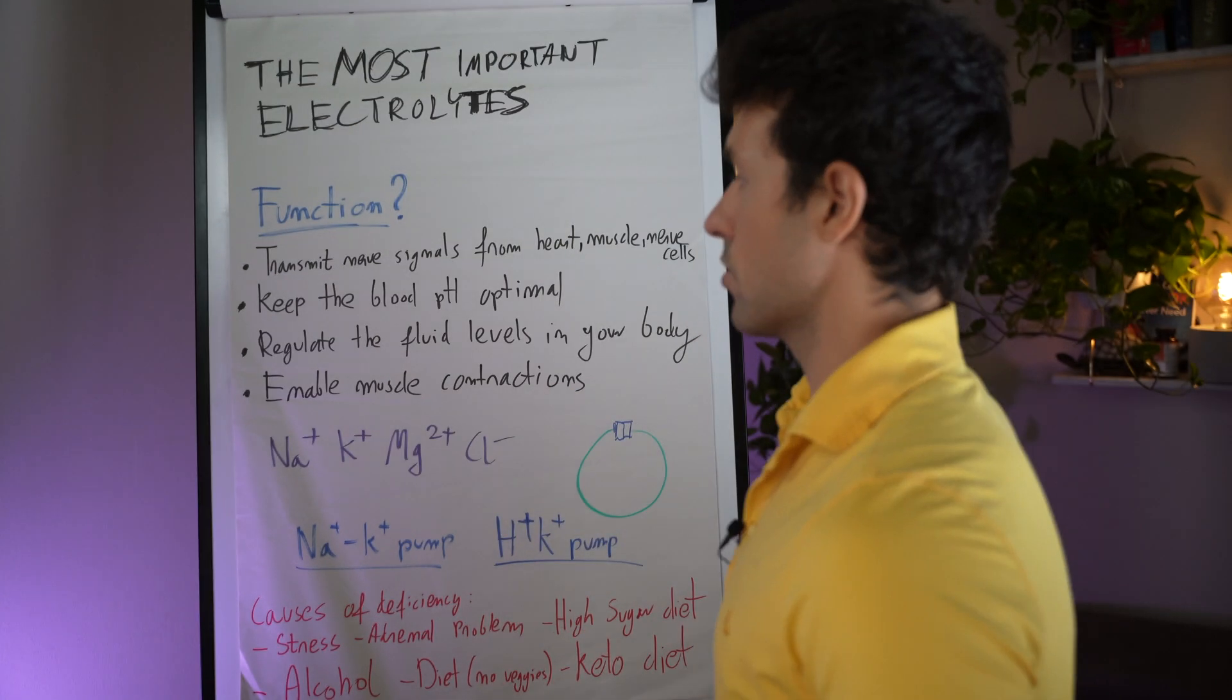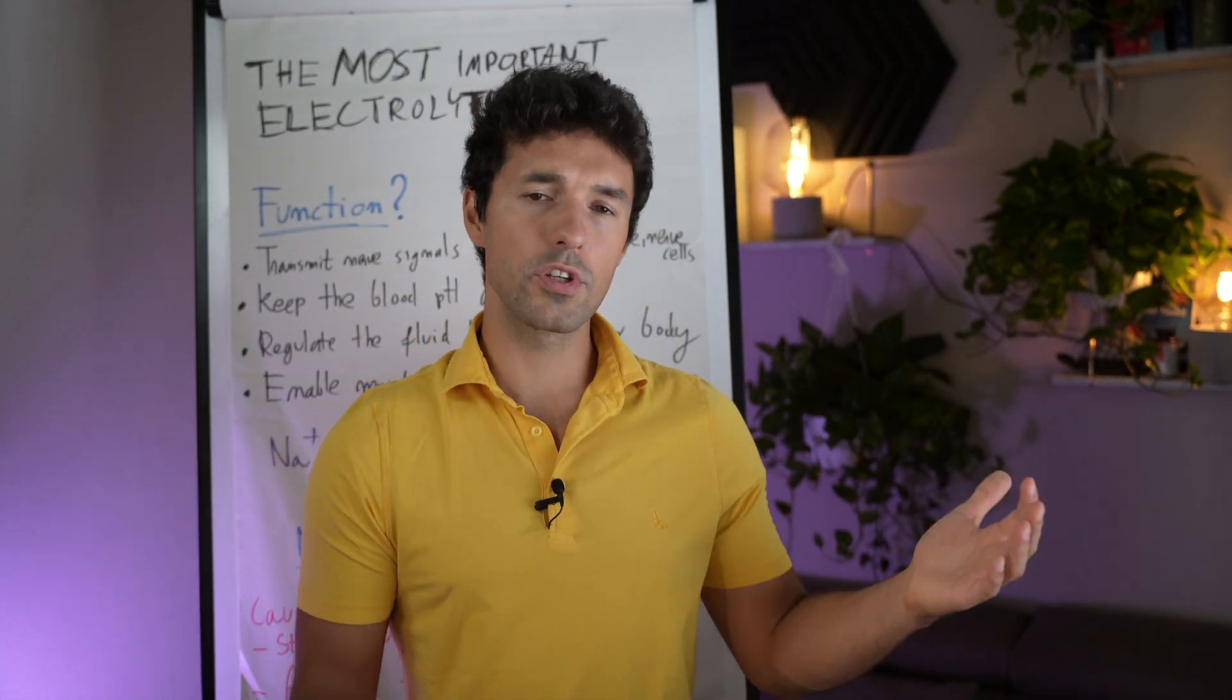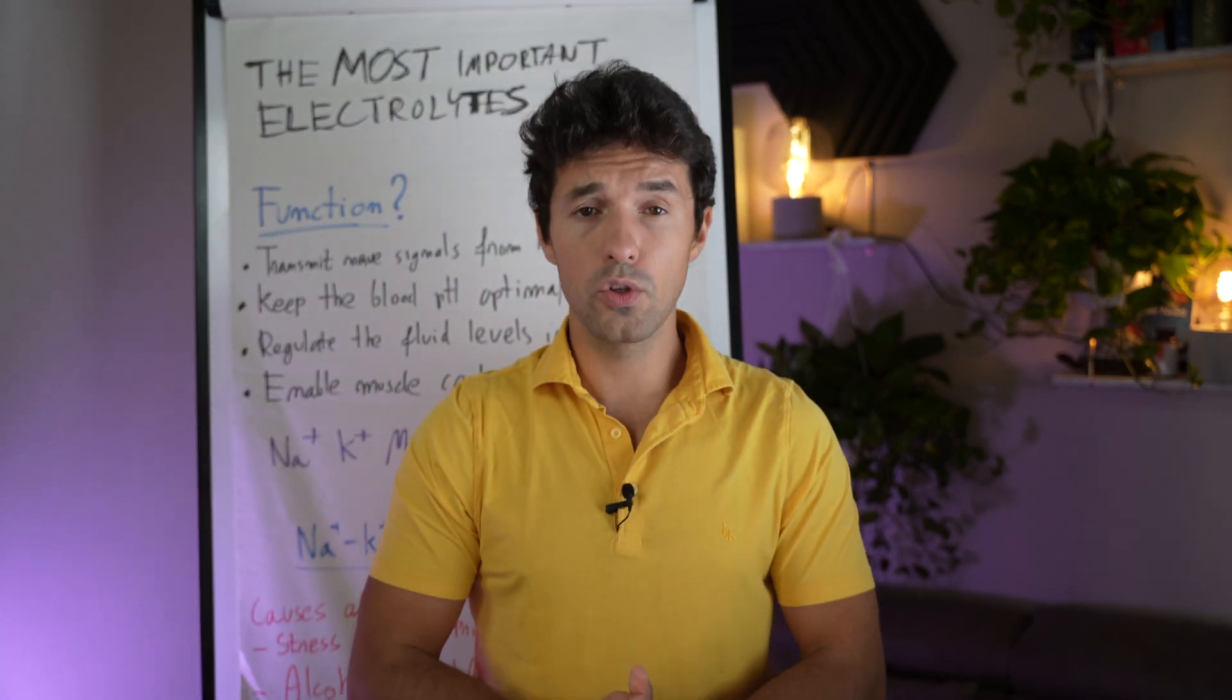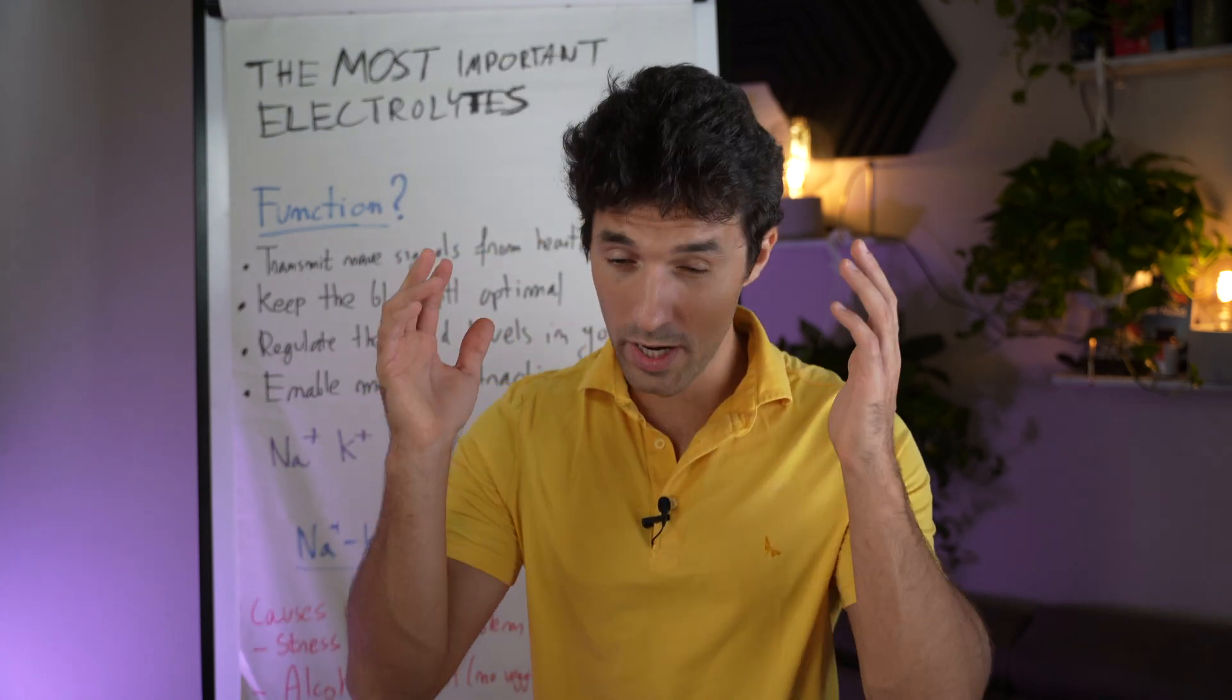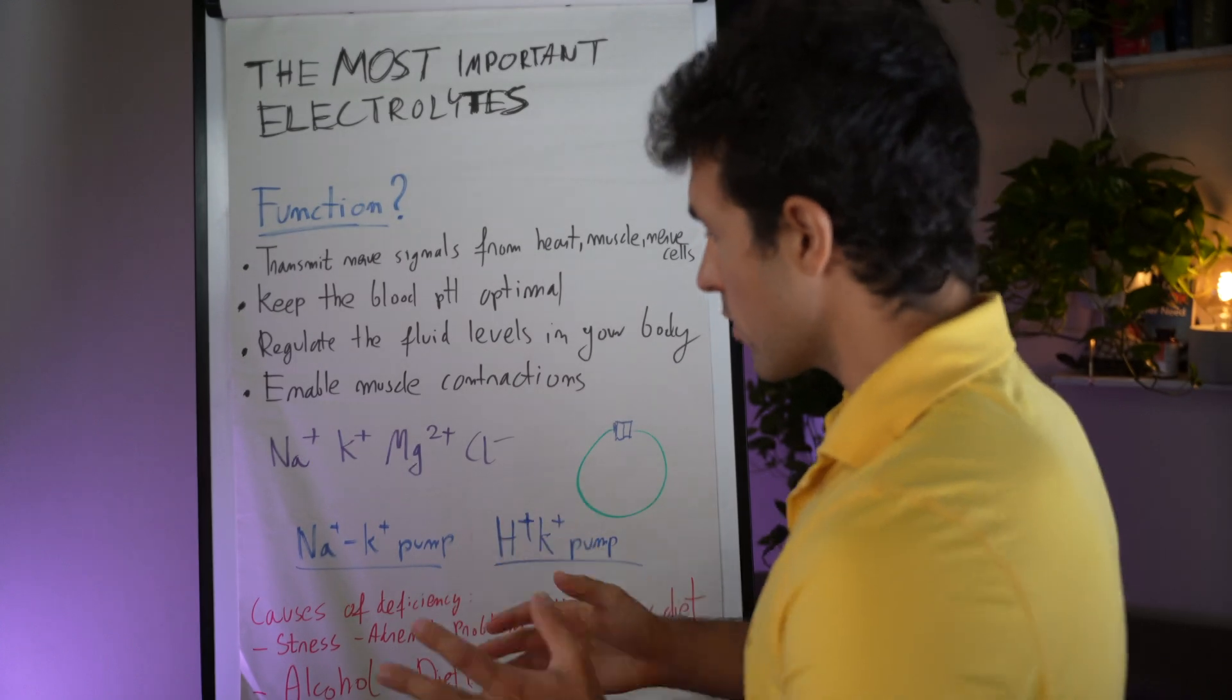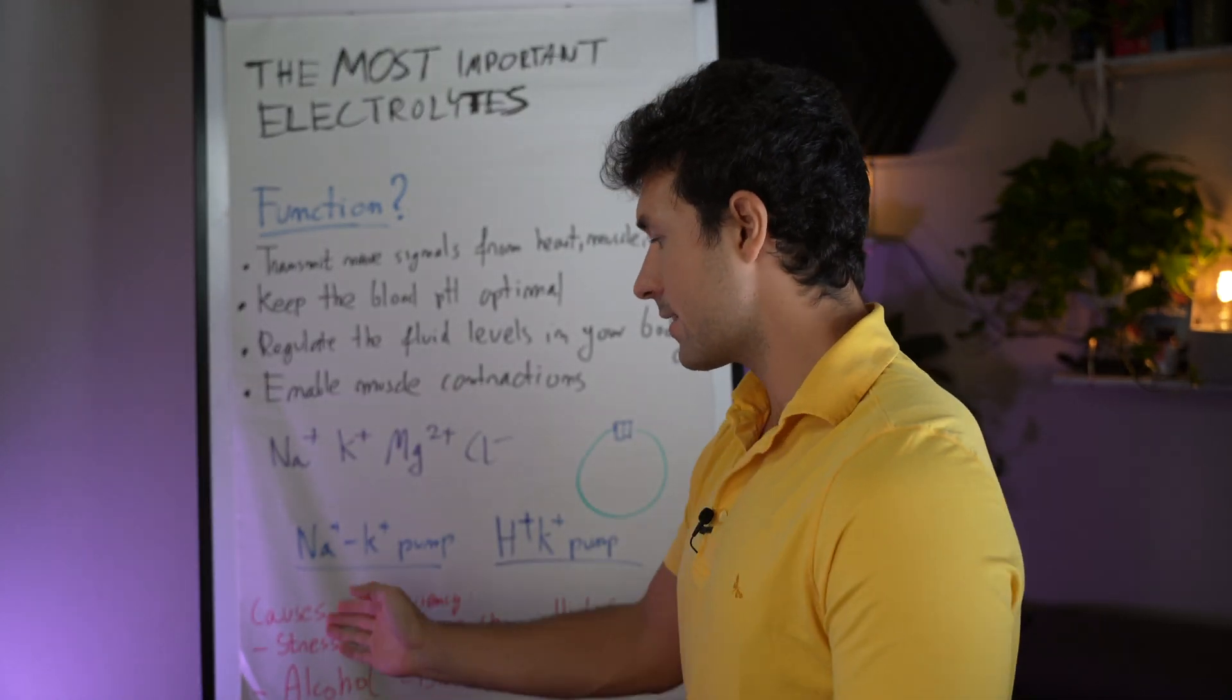And the last one is to enable muscle contractions. So this serves us for workouts, but also during your day to have more energy, to be more awake, more concentrated. You don't want to feel sluggish, you don't want to feel brain foggy. So that's why these four functions. And what causes this deficiency?